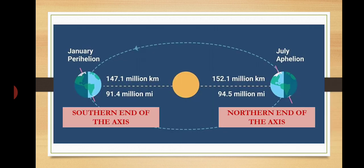In this diagram we can see both the aphelion and perihelion positions of the Earth. The Earth is in aphelion position during the first week of July — it is 152.1 million km away from the Sun. The Earth is in perihelion position during the first week of January — it is 147.1 million km away from the Sun.